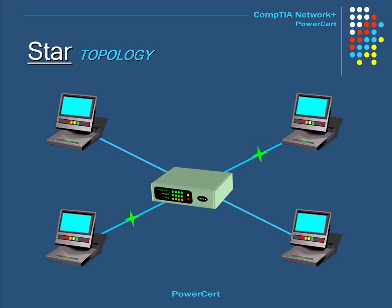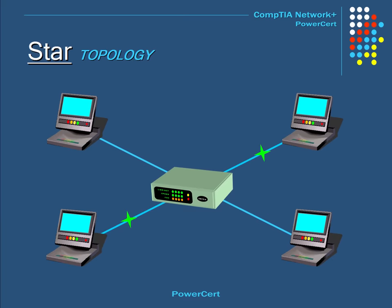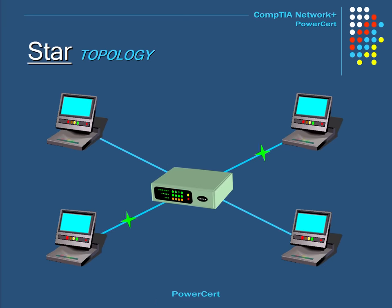The layout of how a network communicates with different devices is called a topology. The most common topology is the star topology. In a star topology, all computers are connected to a central wiring point, such as a hub or a switch. All data on a star network passes through this central point before continuing to its destination.